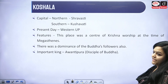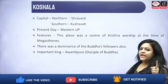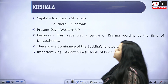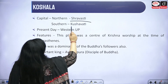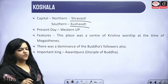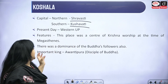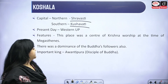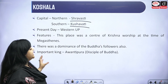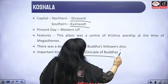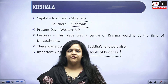The last Mahajanpad for this lecture is Kaushal. It actually has two capitals: Shravasti for the northern sector and Kushavati for the southern sector. It is located in western Uttar Pradesh. Its feature is that it was the second center of Krishna worship at the time of Megasthenes, and there was also a dominance of Buddha's followers. One of its important kings, Avantipura, was a disciple of Buddha.